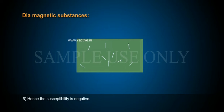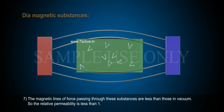Hence, the susceptibility is negative. The magnetic lines of force passing through these substances are less than those in vacuum, so the relative permeability is less than 1.